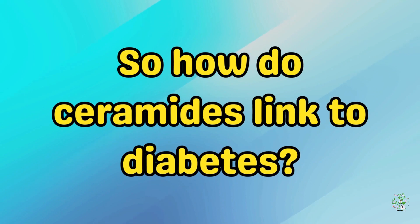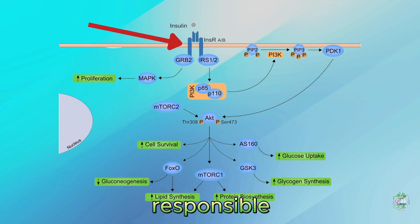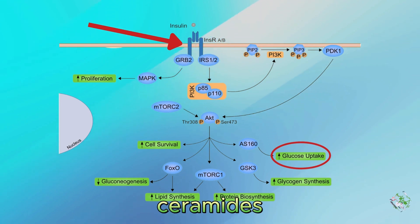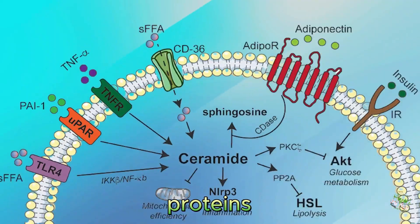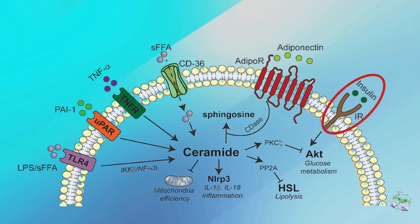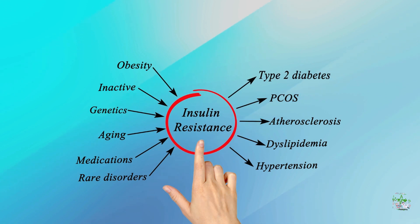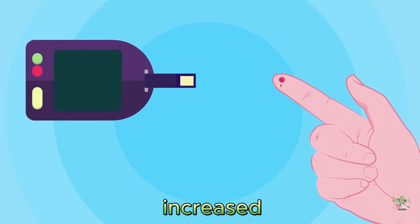So, how do ceramides link to diabetes? There are four main ways. First, ceramides can interfere with the insulin signaling pathway, which is responsible for regulating the uptake and metabolism of glucose in your cells. When ceramides accumulate in your tissues, they can block the activation of key proteins such as insulin receptor substrate and AKT that mediate the effects of insulin. This can result in insulin resistance, meaning that your cells do not respond properly to insulin and cannot use glucose efficiently, leading to high blood sugar levels and increased risk of diabetes.